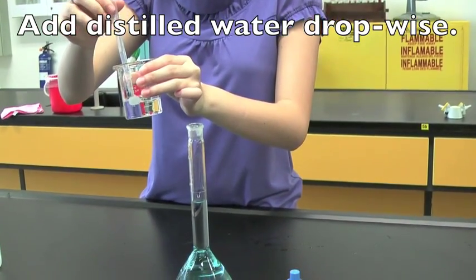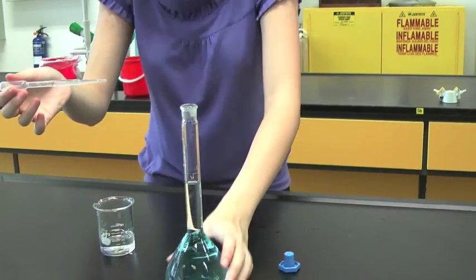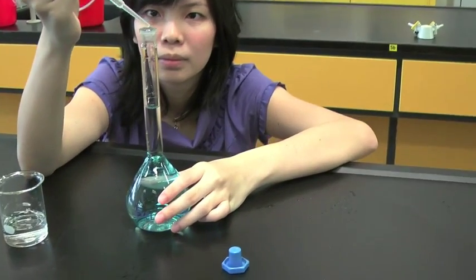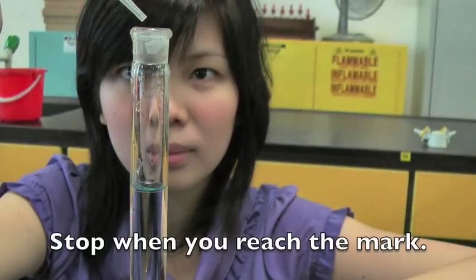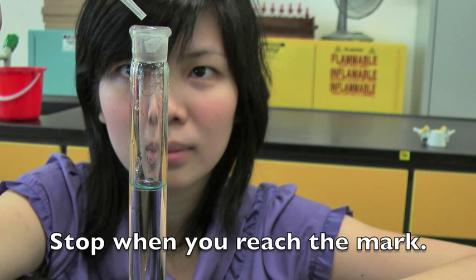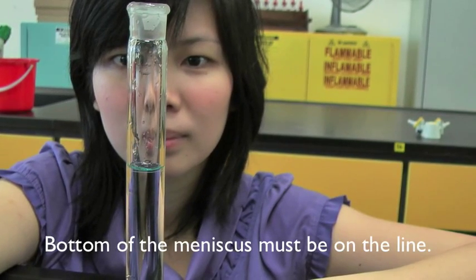With the use of a dropper, add distilled water drop-wise. Stop when you reach the mark. Check that the bottom of the meniscus is on the line.